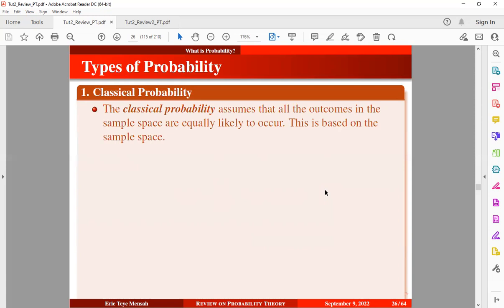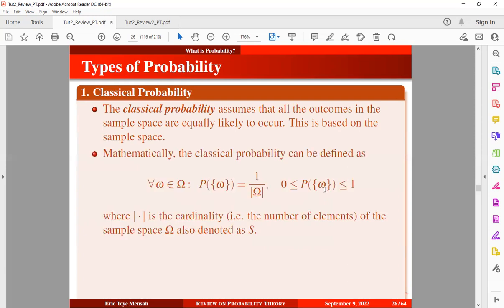The classical probability assumes that all outcomes in a sample space are equally likely to occur, and this is based on the sample space. Mathematically, the classical probability can be defined as shown below. For all elements that belong to the sample space, the probability of observing any element is one divided by the cardinality of the sample space, where the probability of any element in the sample space lies within the interval of zero and one.